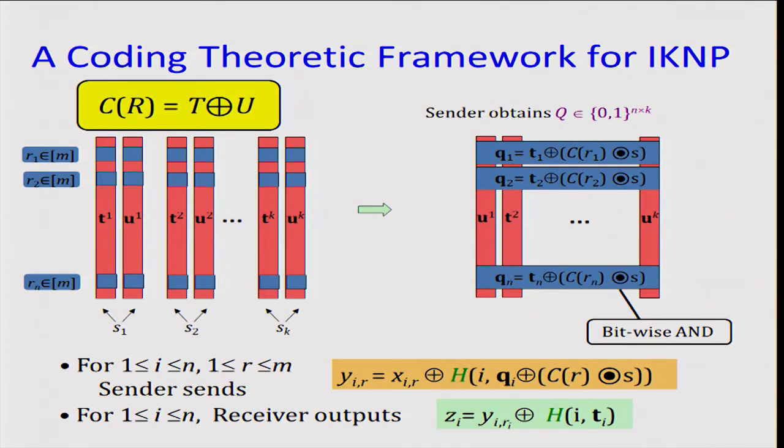In the first step, he's going to take the matrix C of R, and then he's going to additively share it as T and U. So it's T XOR U. And then again, he's going to participate, acting as the sender in K instances of OT. Now the columns, in the ith instance, he'll use TI and UI, where these are the columns of T and U, respectively.